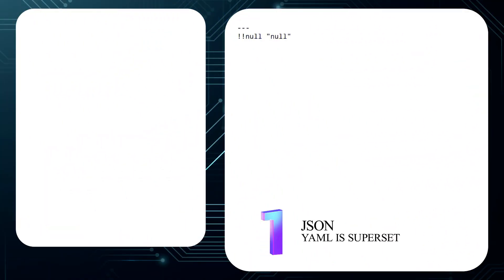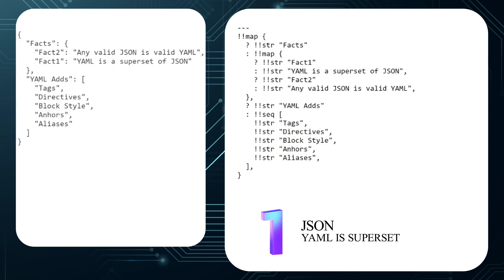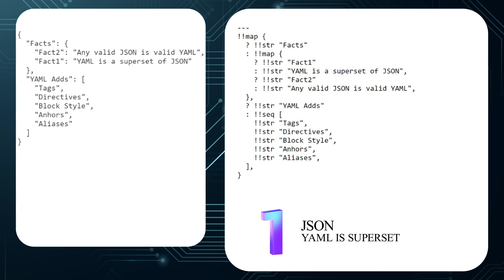Number 1: YAML is a superset of JSON, which means any valid JSON is valid YAML. On the left is a JSON document, and on the right, the canonical form of that content. If the YAML parser you're using supports version 1.2, you can convert all your YAML files to JSON and everything will continue to work. But before you do that, watch the rest of this video — you might discover why you may want to stick with YAML.